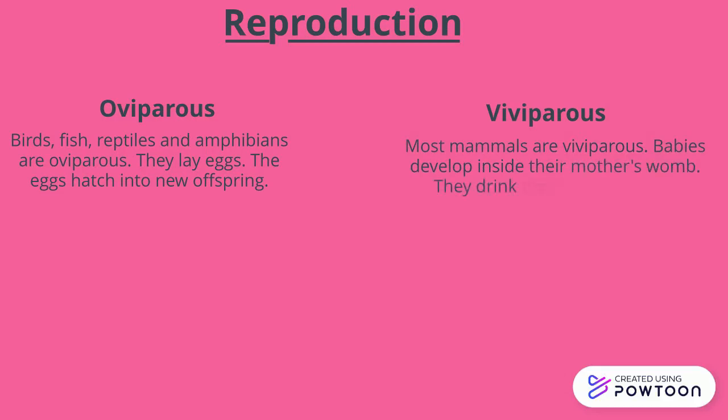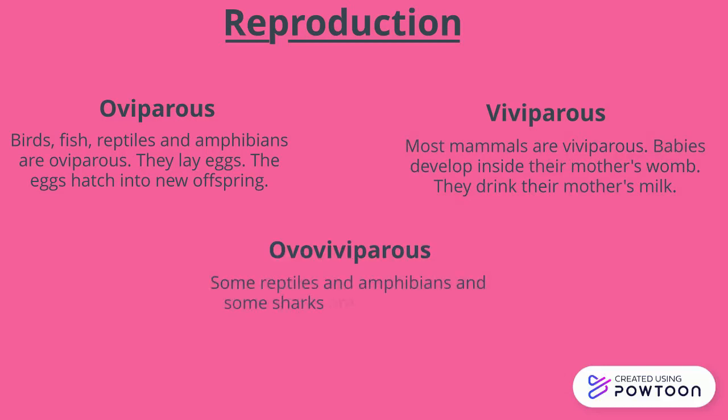Viviparous: most mammals are viviparous. Babies develop inside their mother's womb and they drink their mother's milk. And finally, ovoviviparous: some reptiles, amphibians, and some sharks are ovoviviparous. They develop the eggs inside the mother and hatch inside.